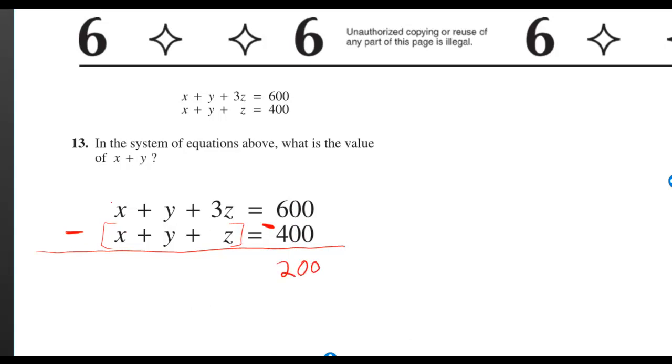Subtracting the left sides, the x's cancel, the y's cancel, and I just have 3z minus z is 2z. Dividing by 2 gives me z is equal to 100.